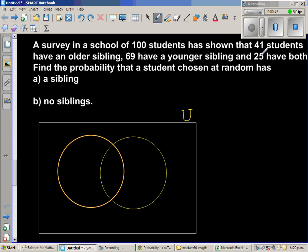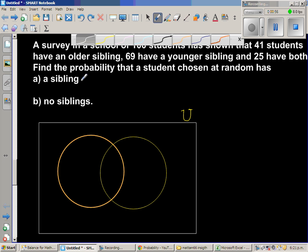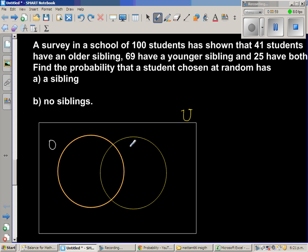Let us call the set of students with older sibling as O. This is the set of older sibling. So let me change color. Let me make it neutral color. So this is the older sibling and this is Y for younger sibling.